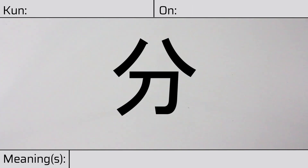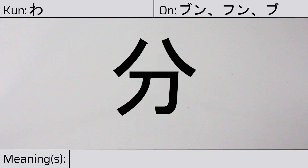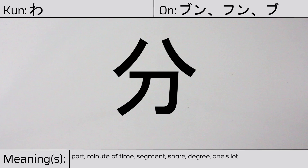Welcome to this lesson on Japanese kanji. Today, we'll be discussing this character. This kanji has a kunyomi or Japanese reading of wa, and it has onyomi or Chinese readings of bun, fun, or bu. This character has the meanings part, minute of time, segment, share, degree, one's lot, duty, understand, know, rate, 1%, chances, or divide.